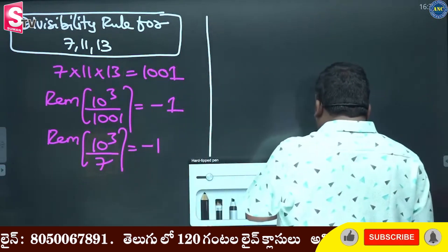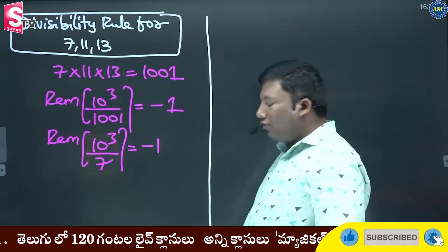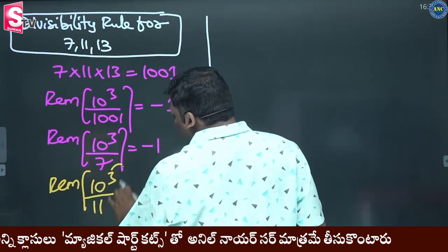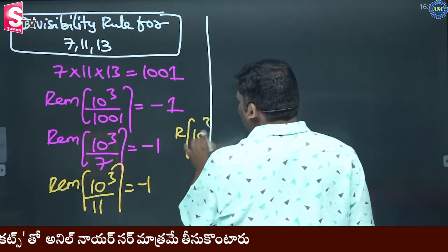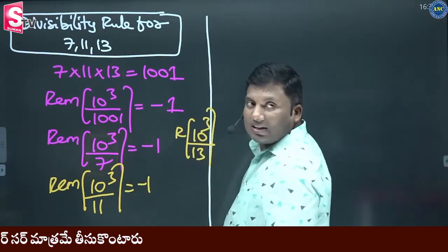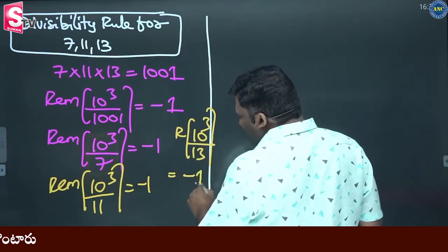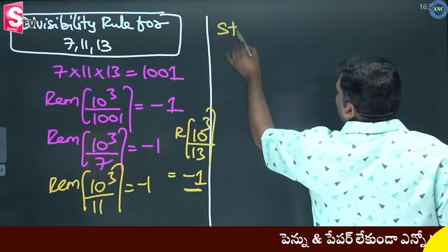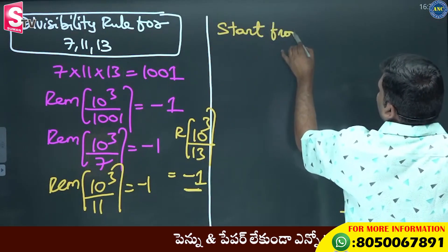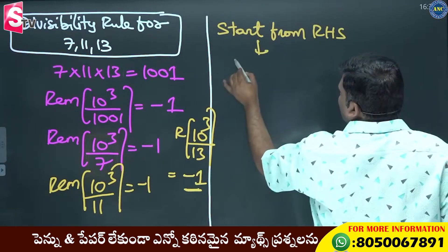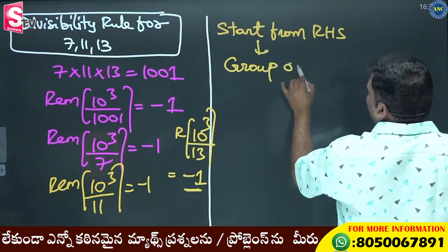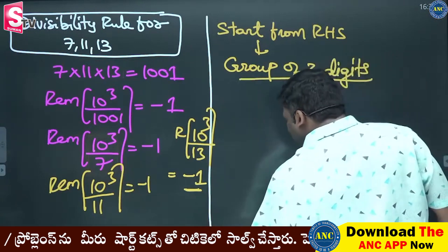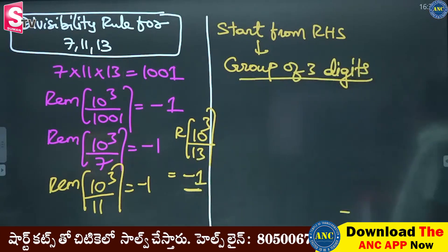10 cube divided by 11 is minus 1. 10 cube divided by 13: 13 ones are 13, minus 3, minus 3 cube is minus 1. Automatically. So the logic: start from right-hand side, take a group of 3 digits — why 3 digits? Because 10 cube divided by 1001 gives minus 1. Alternatively add and subtract.